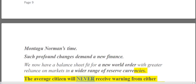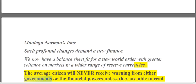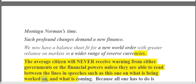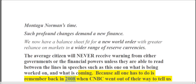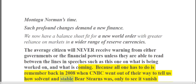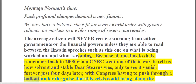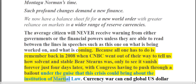The average citizen will never receive warning from either governments or the financial powers unless they are able to read between the lines of speeches such as this one. Because all one has to do is remember back in 2008 when CNBC went out of their way to tell us how solvent and stable Bear Stearns was, only to see it vanish forever just four days later, with Congress having to push through a bailout under the guise that this crisis could bring about the institution of martial law.